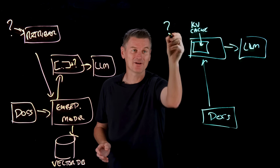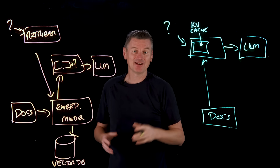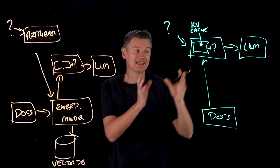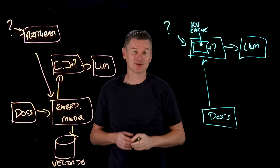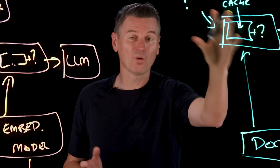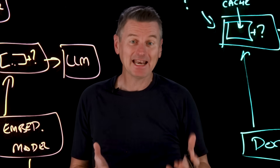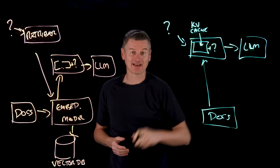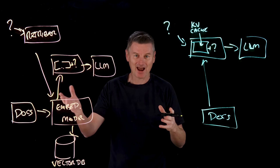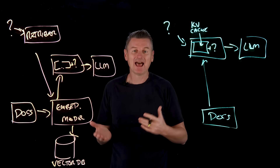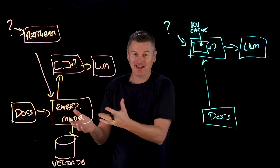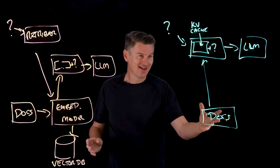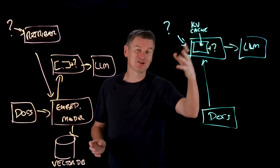When a user submits a query, we take the KV cache and add the query to it, and all of that gets sent into the large language model. Because the transformer's cache already has all the knowledge tokens in it, the model can use any relevant information as it generates an answer without having to reprocess all that text again. The fundamental distinction between RAG and CAG comes down to when and how knowledge is processed. With RAG, we fetch only the stuff we think we'll actually need. With CAG, we load everything — all our documents — up front and remember it for later.